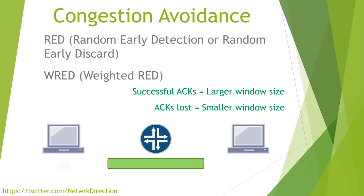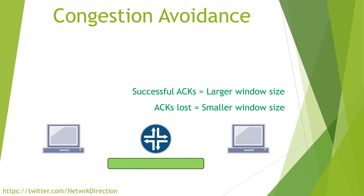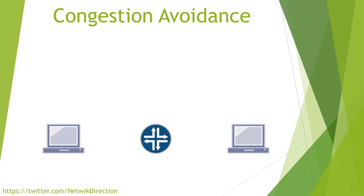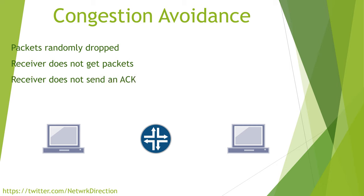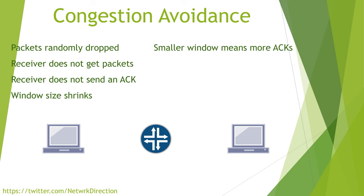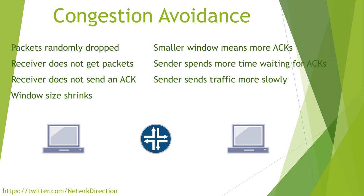Let's see how RED fits into the picture. When a link becomes congested, the buffer begins to fill up. If the buffer is completely full, we will start seeing tail drops. What RED will do is randomly select a few packets to be dropped before the network gets congested, in order to help prevent congestion. By dropping a few packets, the receiver won't get those packets and therefore won't send an acknowledgement. A lost acknowledgement means the window size will shrink, acknowledgements will need to be sent more often, and the sender will need to pause and wait for acknowledgements more often. The result is that the sender will not send traffic as quickly, which means less congestion.